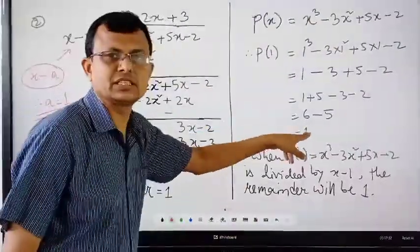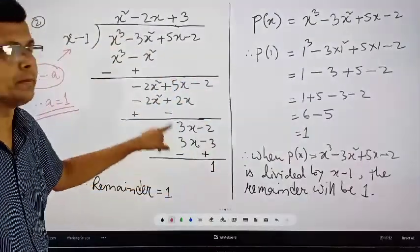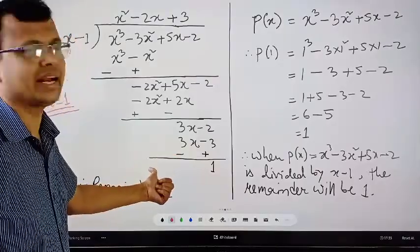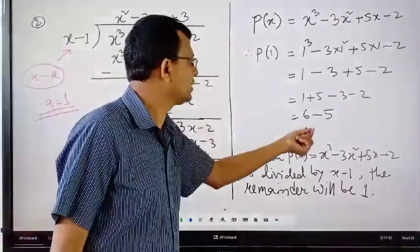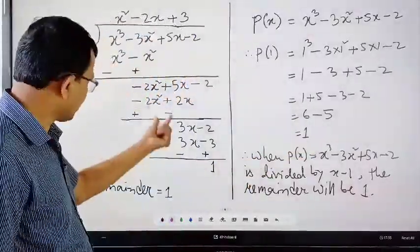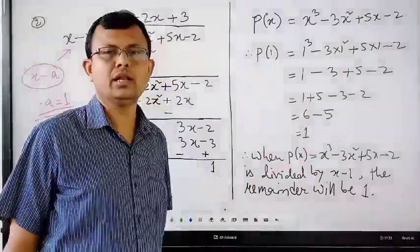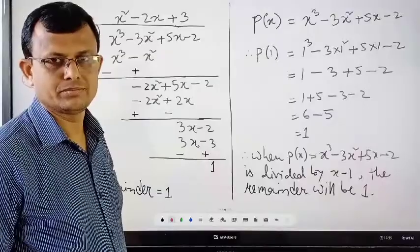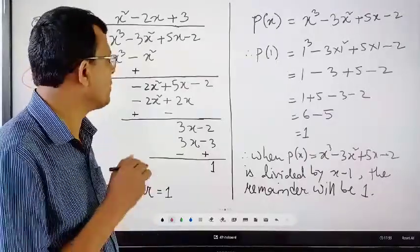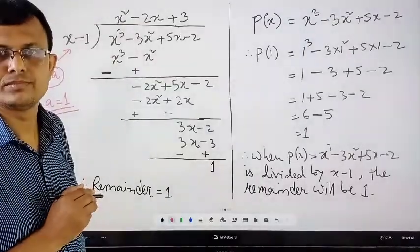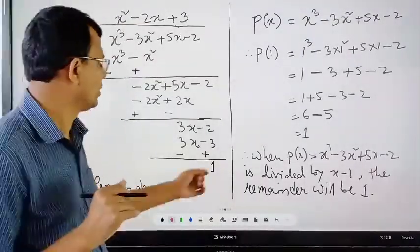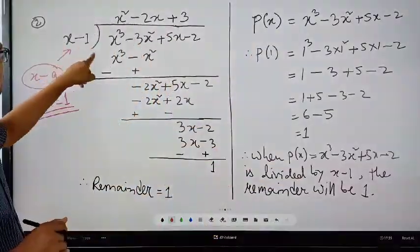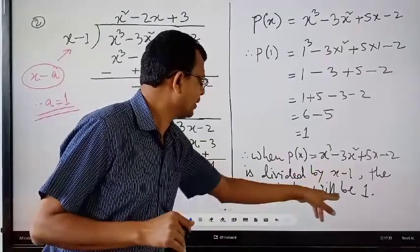This 1 is nothing but the remainder we obtain by actual division. So this remainder can be obtained without actual division — that is why it is called the Remainder Theorem. With this theorem, what we can get is the remainder of the division, not the quotient. When p(x) is divided by x minus 1, the remainder will be 1.